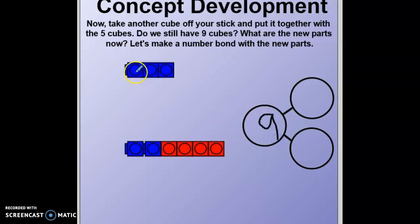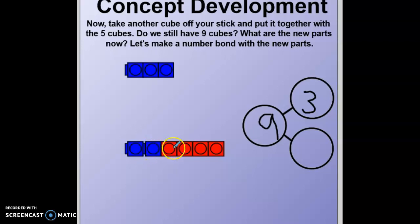Let's see how many we have on top: one, two, three. And let's see how many on the bottom group: one, two, three, four, five, six. Here is what your number bond should look like. If you'd like to do that challenge again and create an addition sentence or a subtraction sentence, go ahead and pause me. And then when you're ready, go to the next problem.